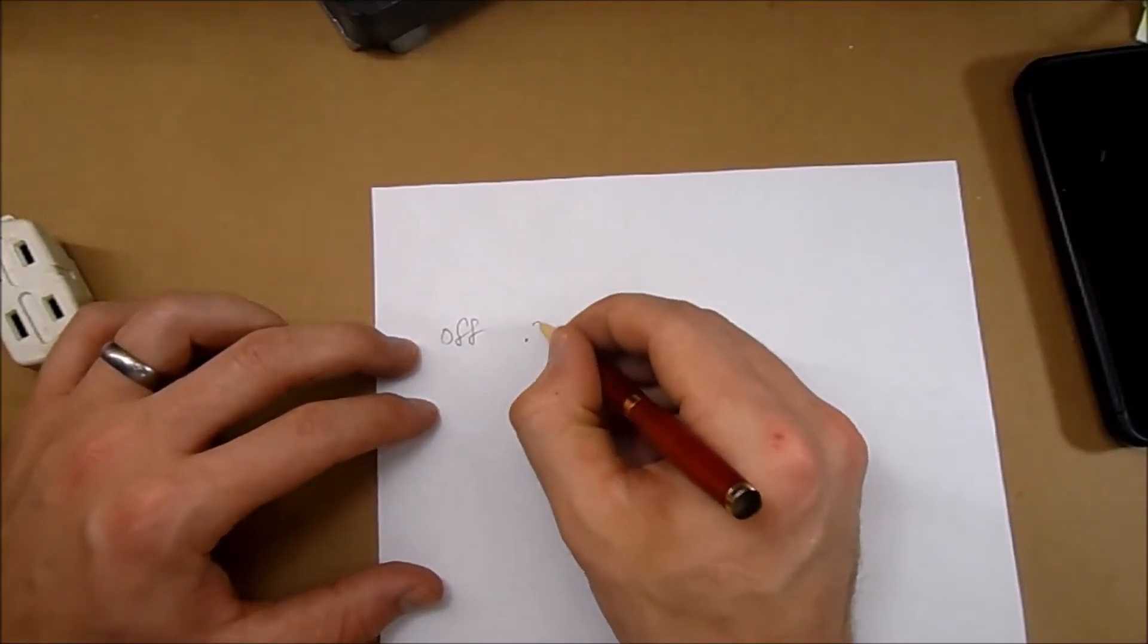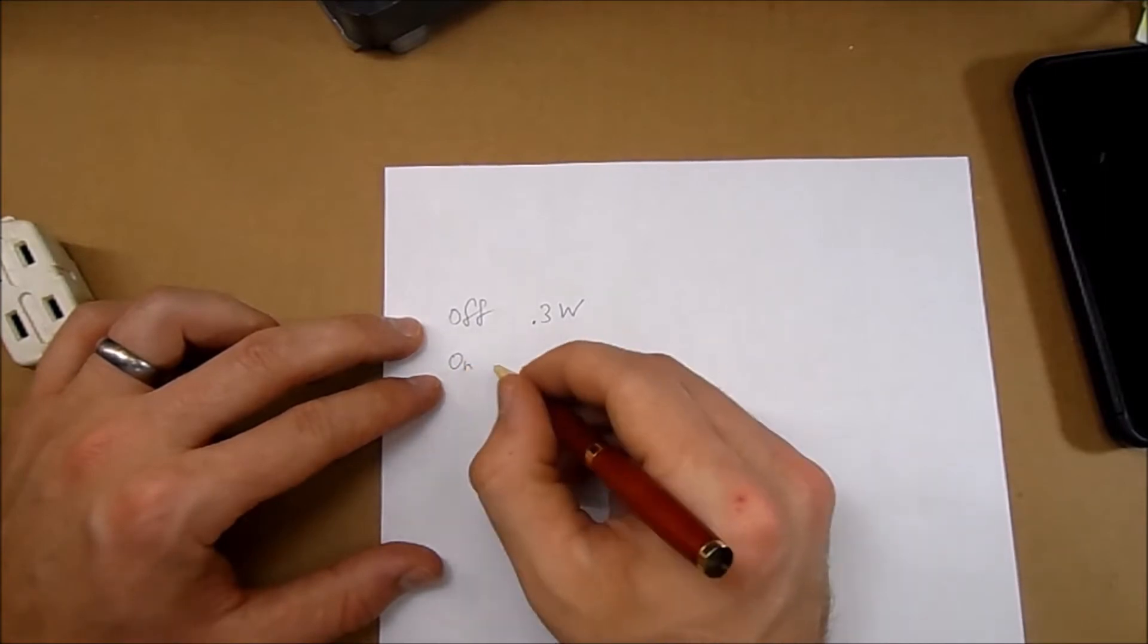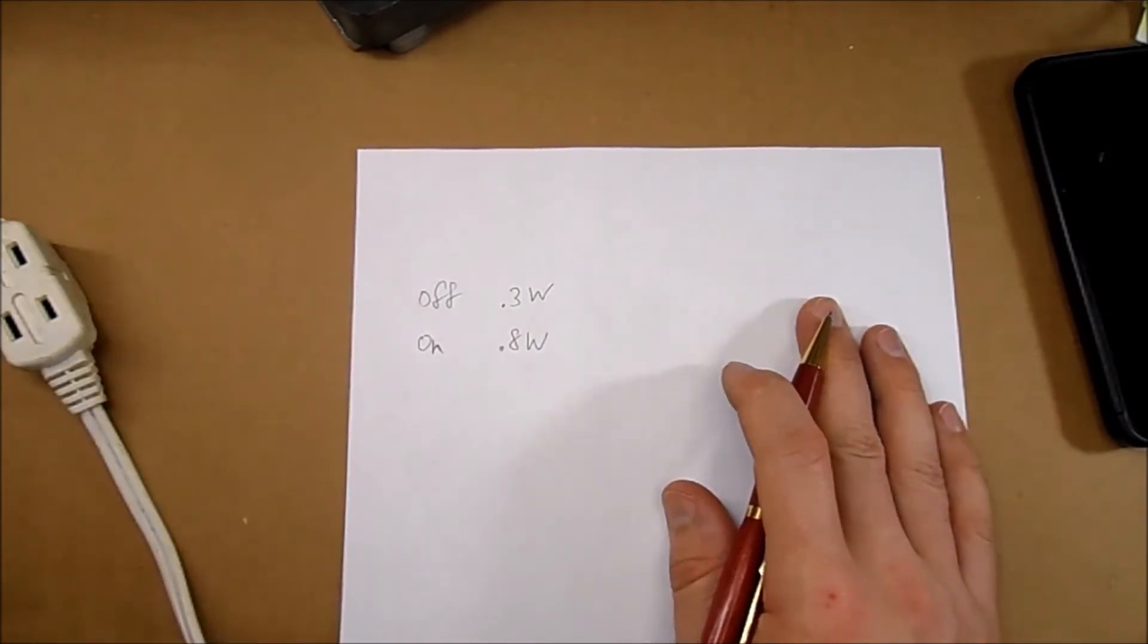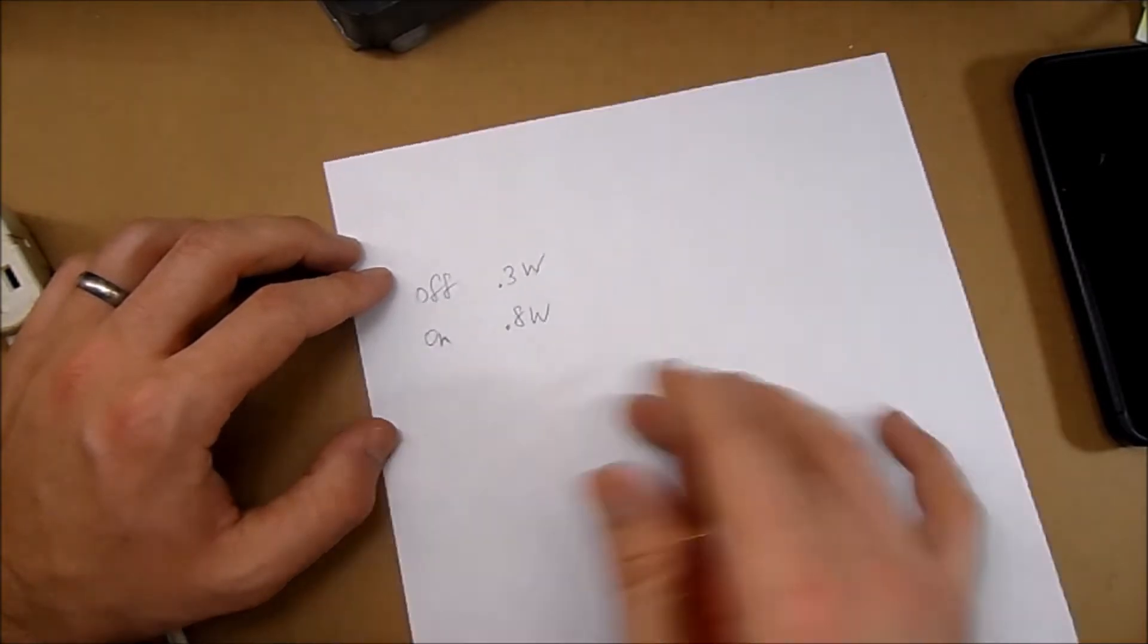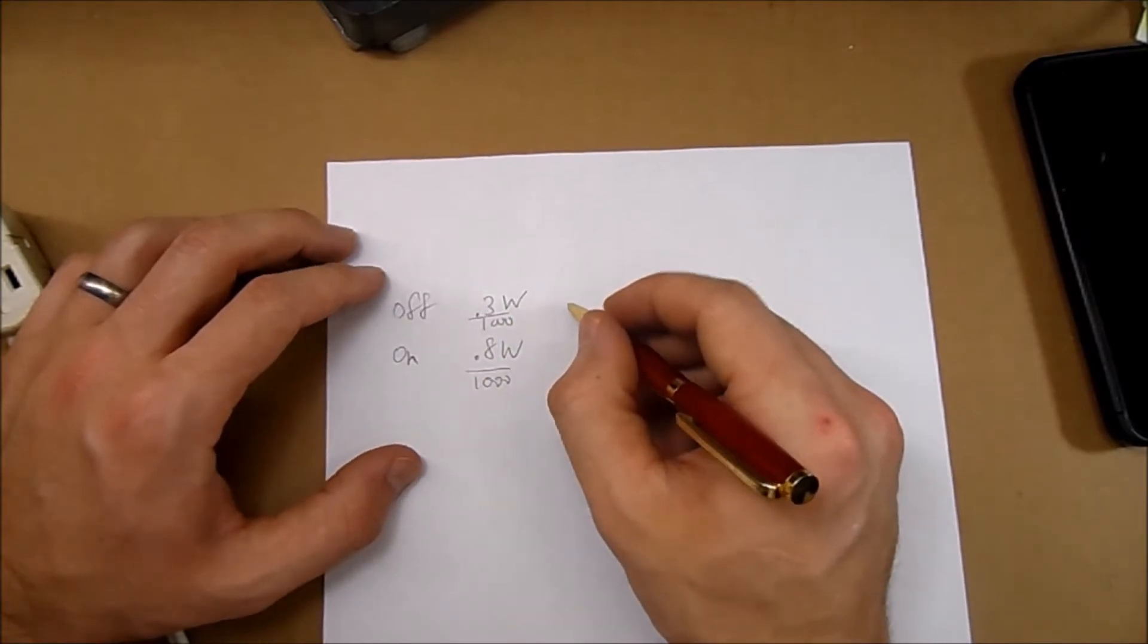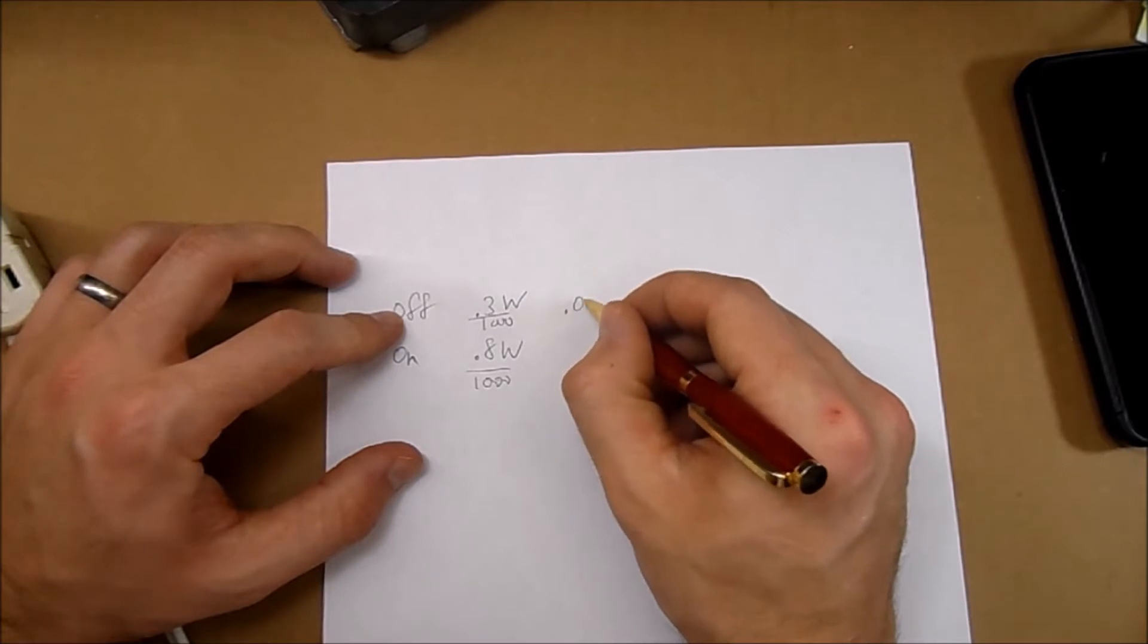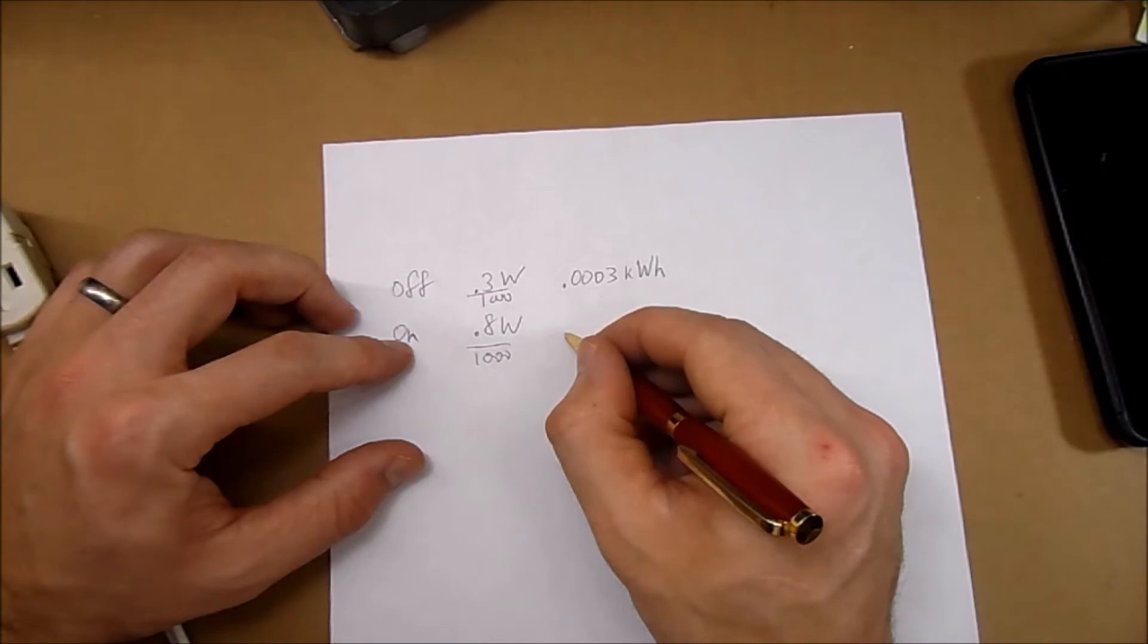Now how many kilowatts is it using in an hour? So one kilowatt hour is a thousand watts for one hour. So if we divide this by a thousand for each number, then when the Sonoff is off it is using 0.0003 kilowatt hours, and whenever it's on it is using 0.0008 kilowatt hours.